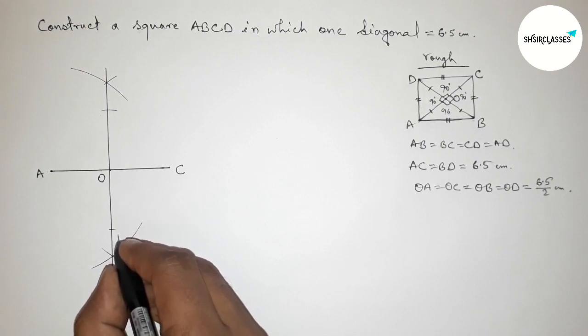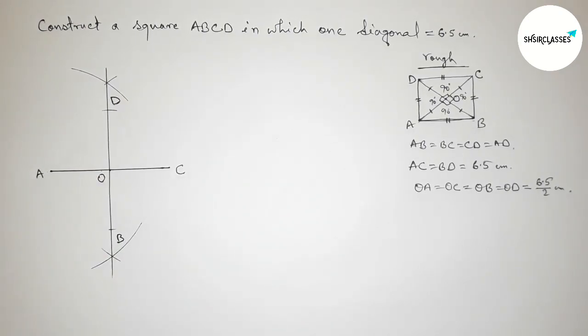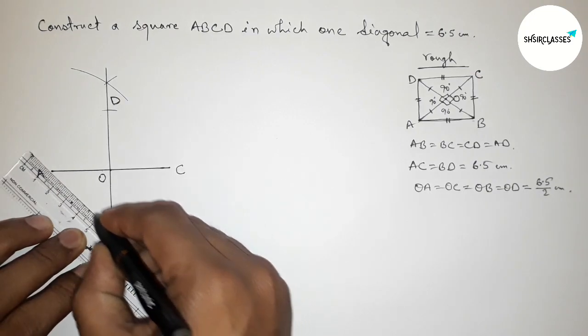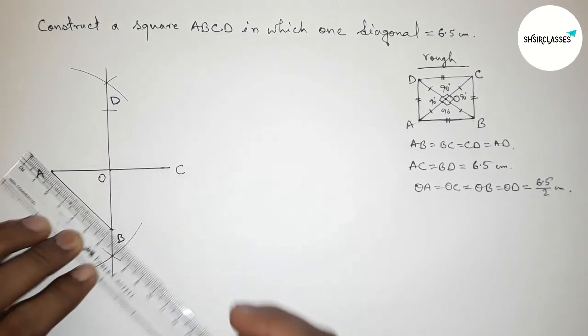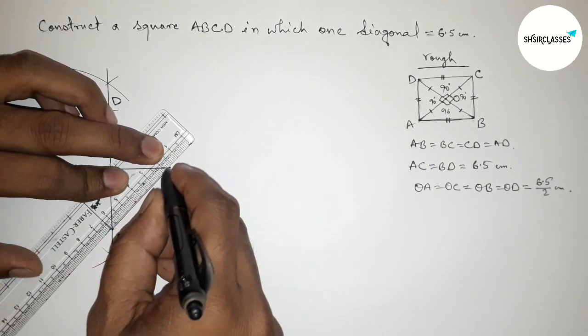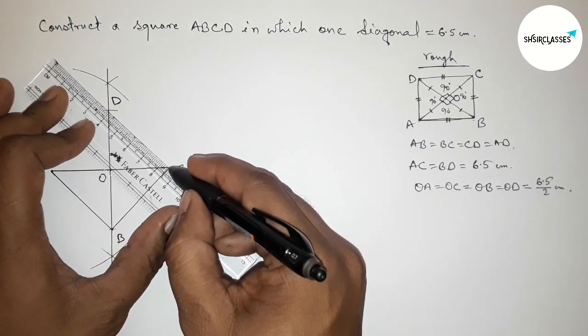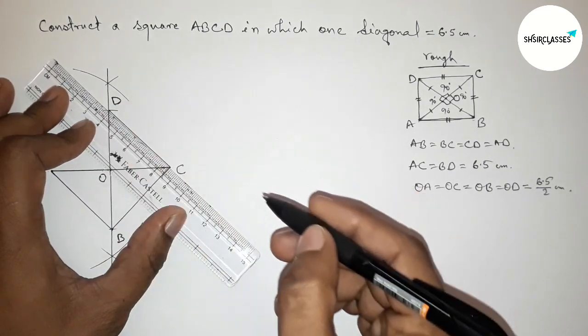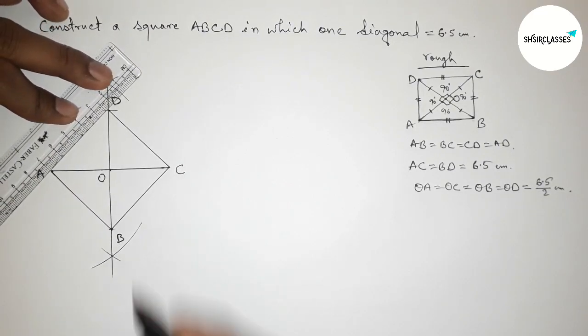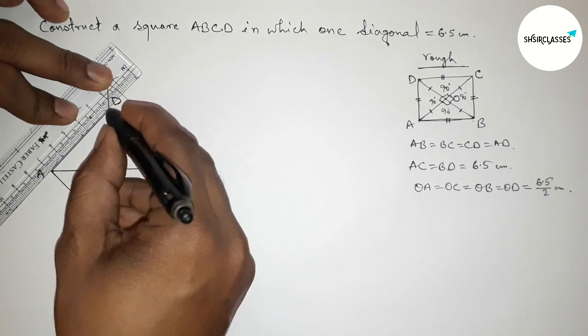Now taking here point B and here D. So next, first joining A and B, then joining BC, then joining the line CD.